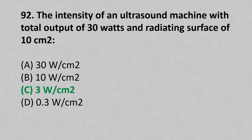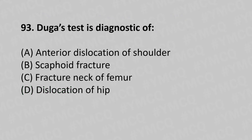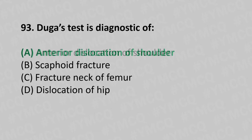Moving to our 93rd question. Dugas' test is the diagnosis of: option A anterior dislocation of the shoulder, option B scaphoid fracture, option C fracture of the neck of femur, option D dislocation of the hip. The answer is option A, anterior dislocation of the shoulder.